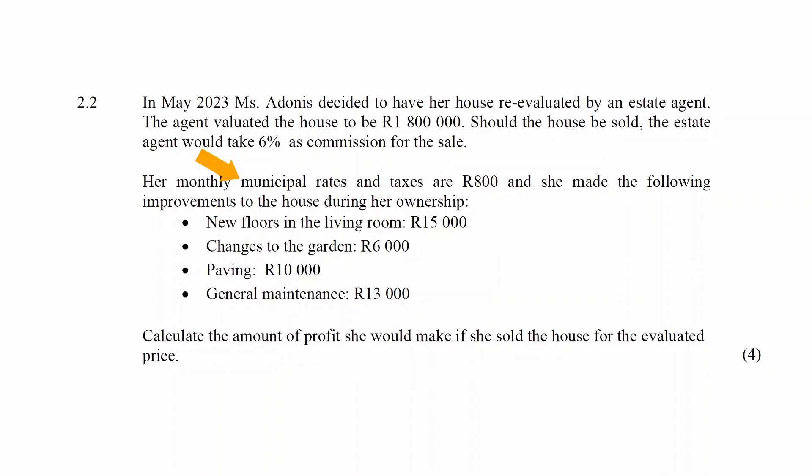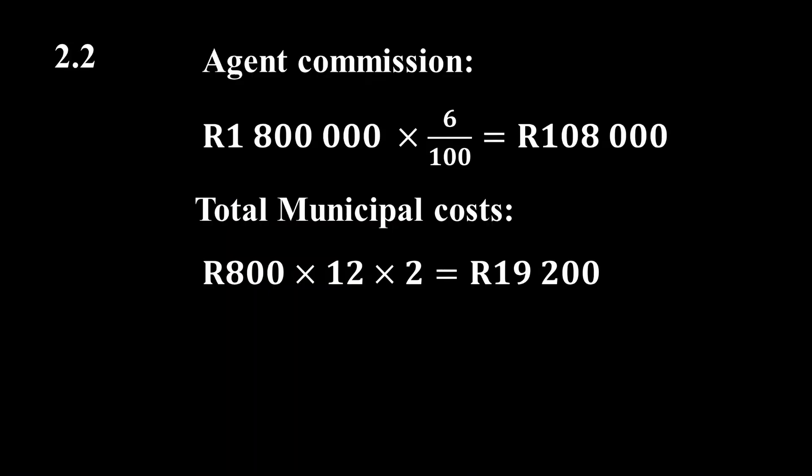Next, we calculate the total rates and taxes that were paid monthly to the municipality over the two years that Macedonis owned the house, from May 2021 to May 2023. This will be 800 Rand per month multiplied by 12 months multiplied by two years, giving us a total of 19,200 Rand.